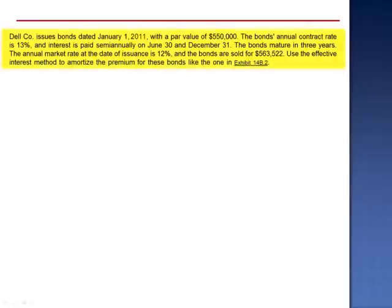Exercise 5. Dell Company issues bonds dated January 1, 2011, with a par value of $550,000. The bond's annual contract rate is 13%, and interest is paid semi-annually on June 30 and December 31. The bonds mature in 3 years, the annual market rate at the date of issuance is 12%, and the bonds are sold for $563,522.